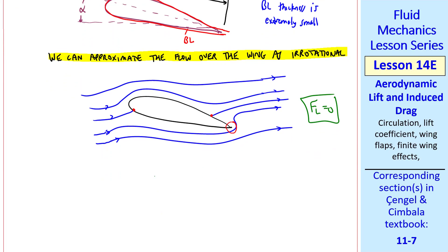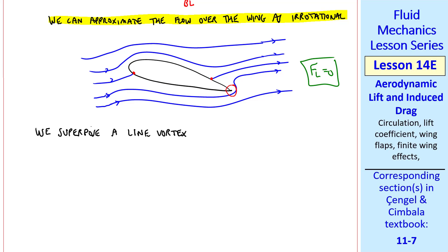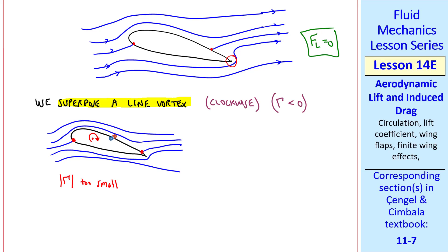Turns out that we can correct for this, though. We use our method of superposition and superpose a line vortex at some point in the wing. This vortex must be clockwise. In other words, gamma has to be negative since positive gamma yields a counterclockwise vortex. If the magnitude of gamma is too small, we get a situation like this, but with the downstream stagnation point moving further towards the trailing edge.